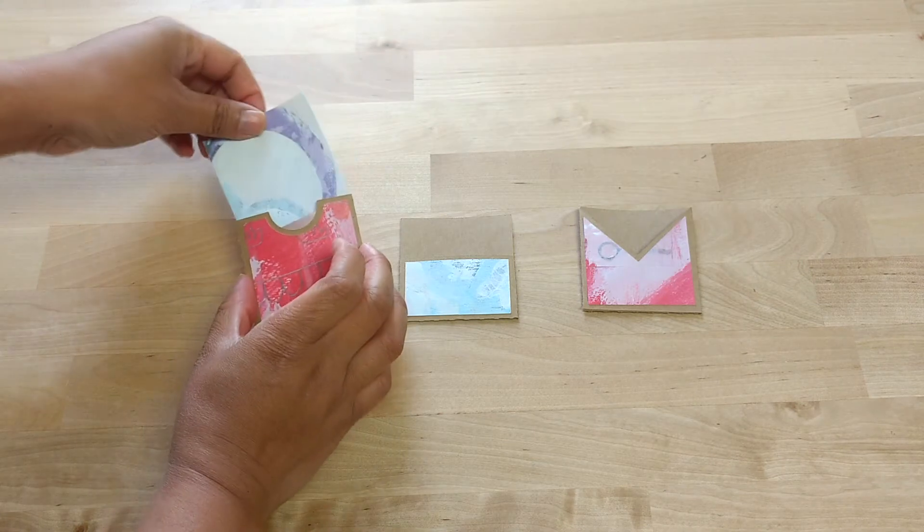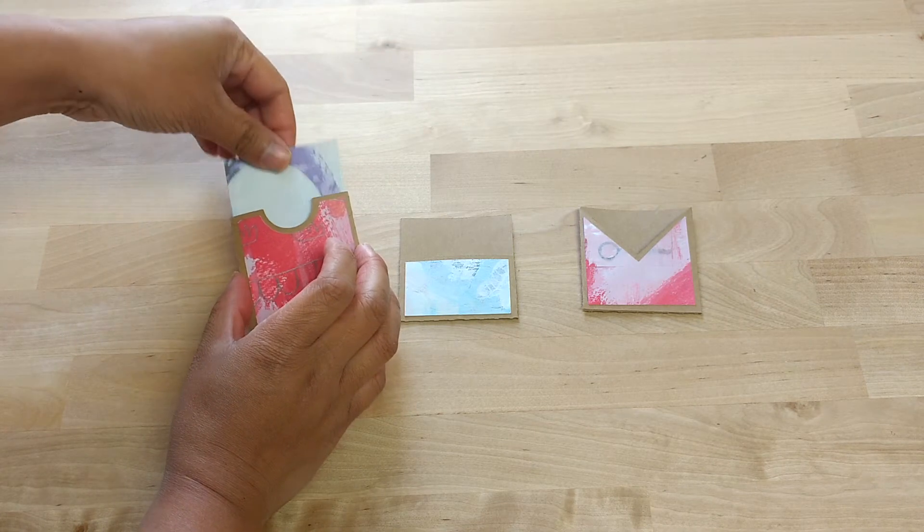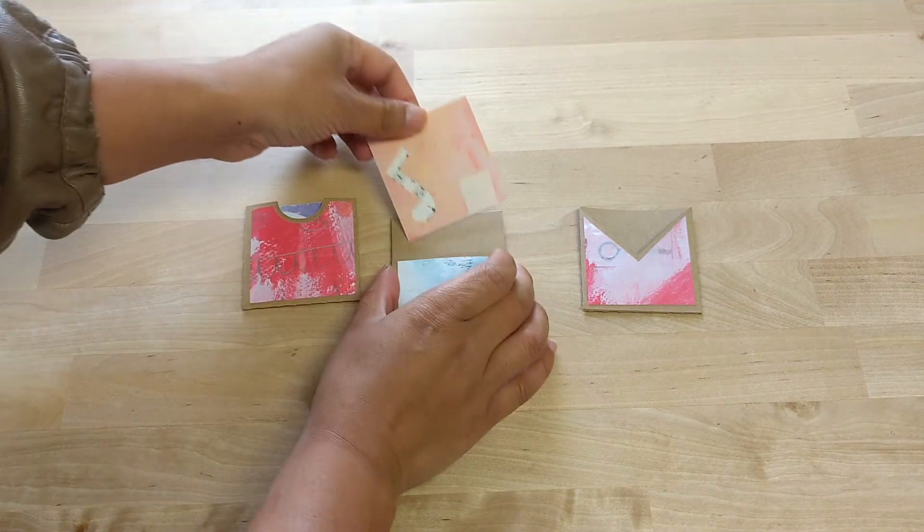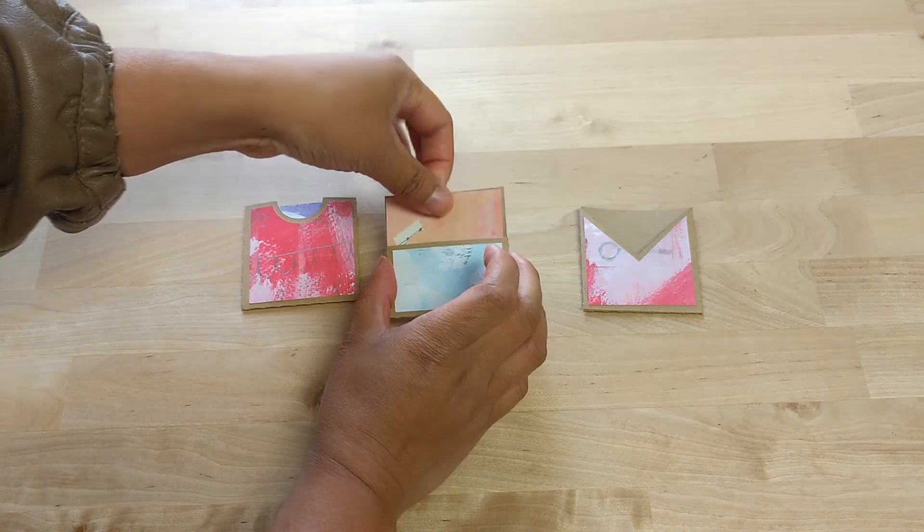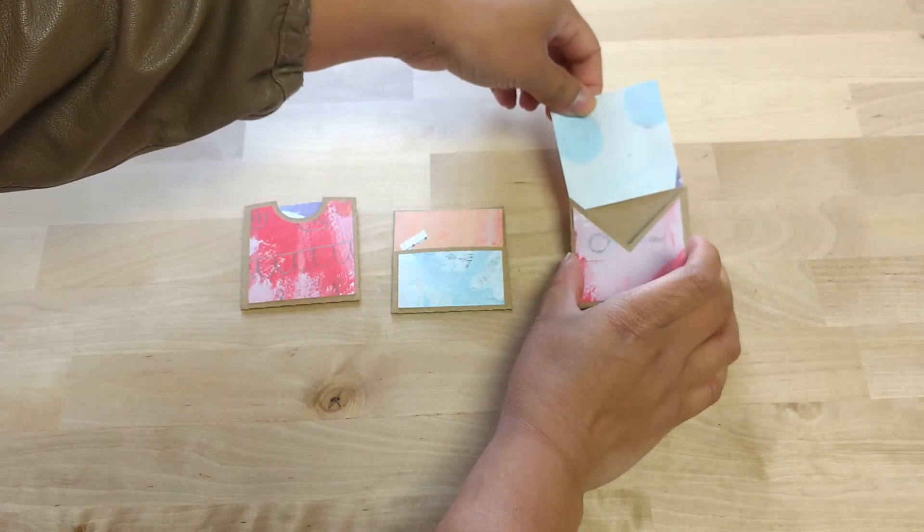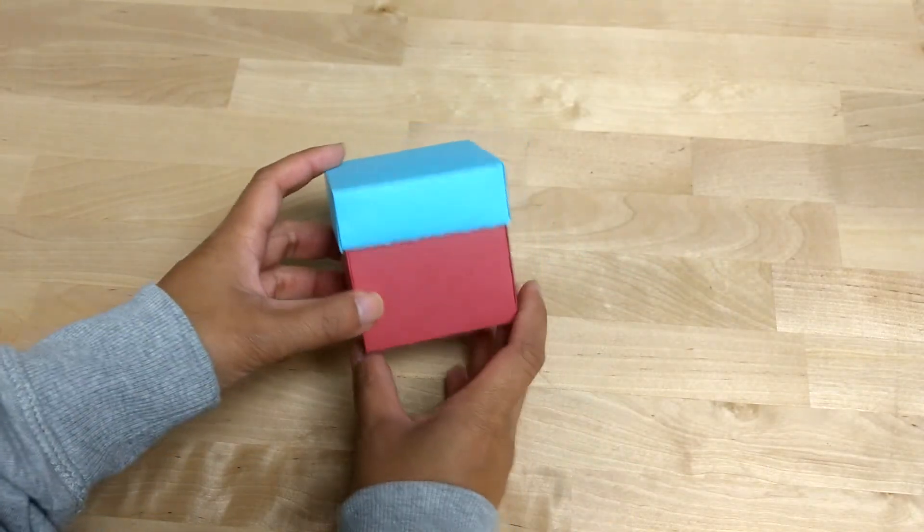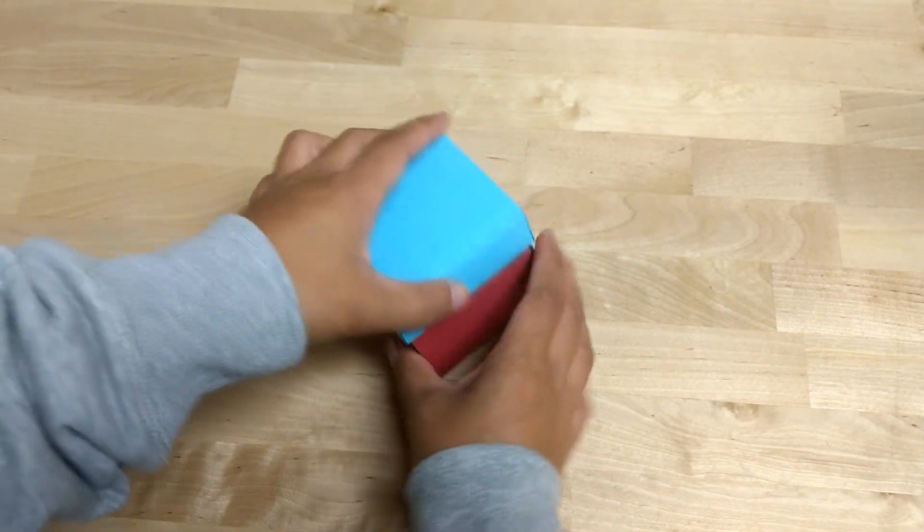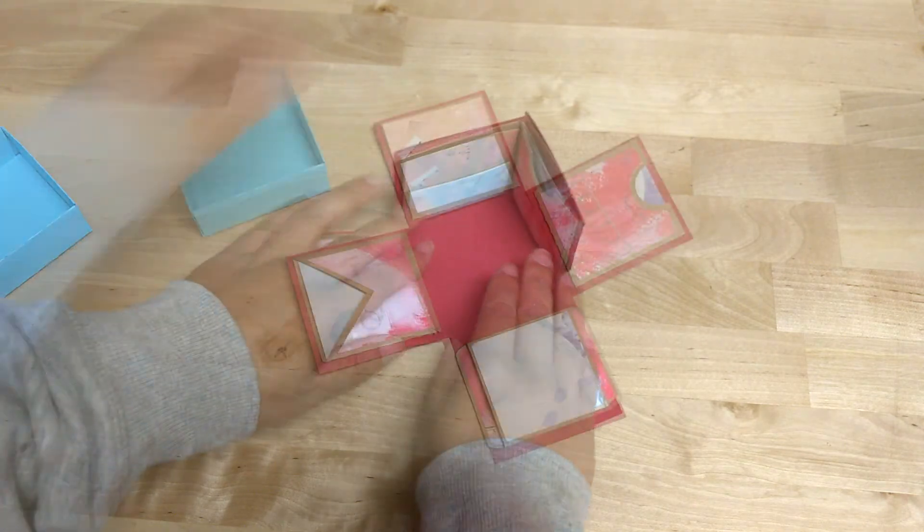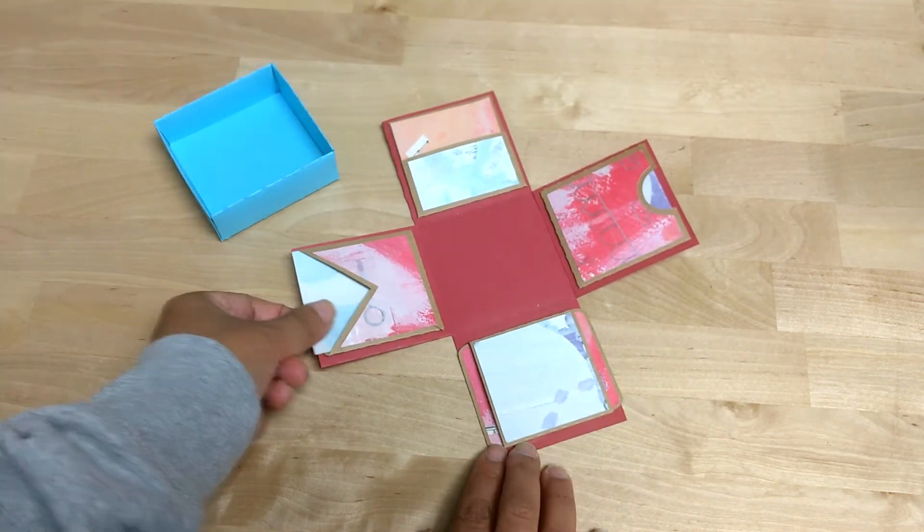Each card template does come with a little insert card for you to slide inside. I believe these inserts measure two and three eighths of an inch by two and three eighths of an inch. If you have any Instagram photos or square photos you can print them off at two by two and then mat them and have that onto the insert.